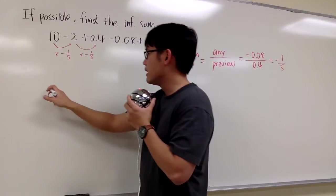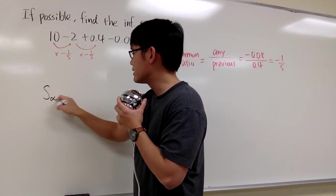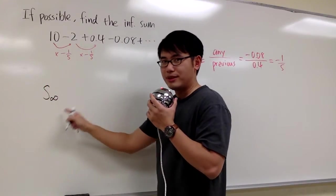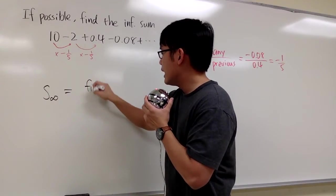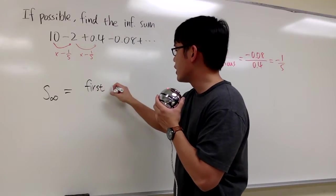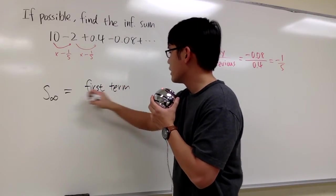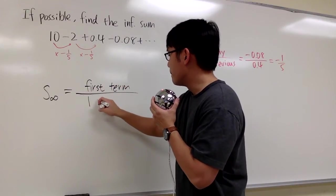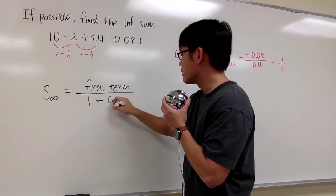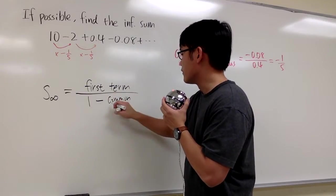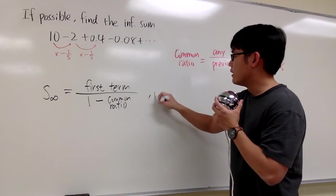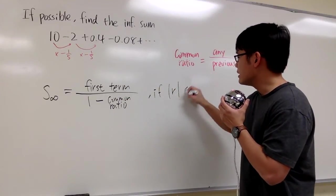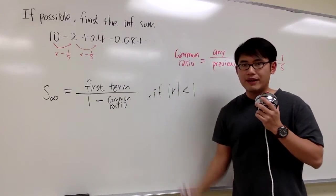The formula is the infinite sum for geometry series. Let me emphasize: it's the infinite geometry sum. It equals, I'll write this in words, the first term over 1 minus the common ratio. This is the formula. This works if the absolute value of r is less than 1, which we do have.